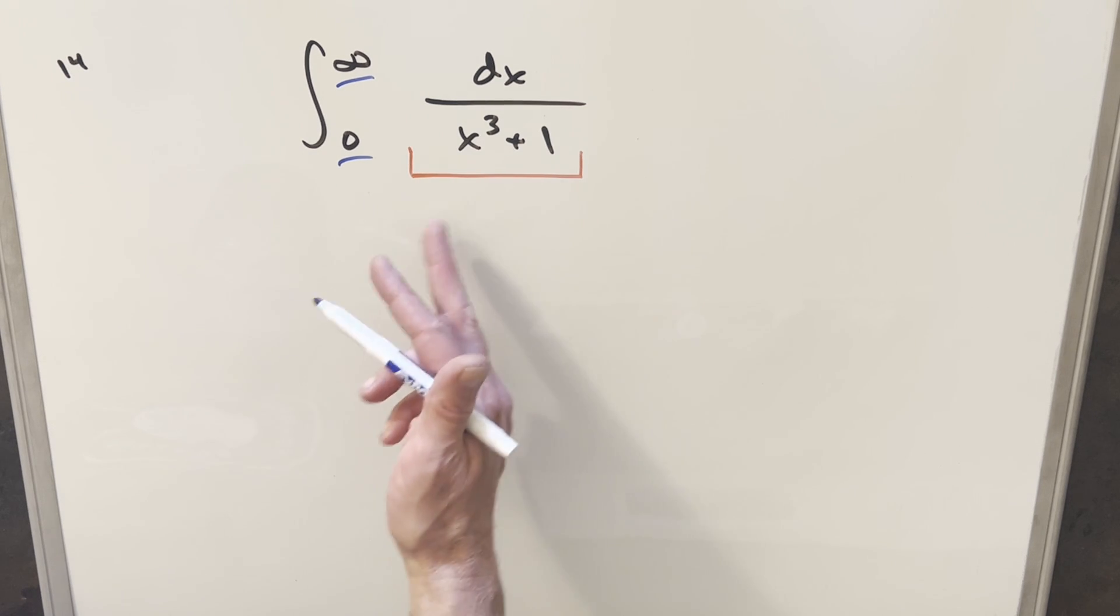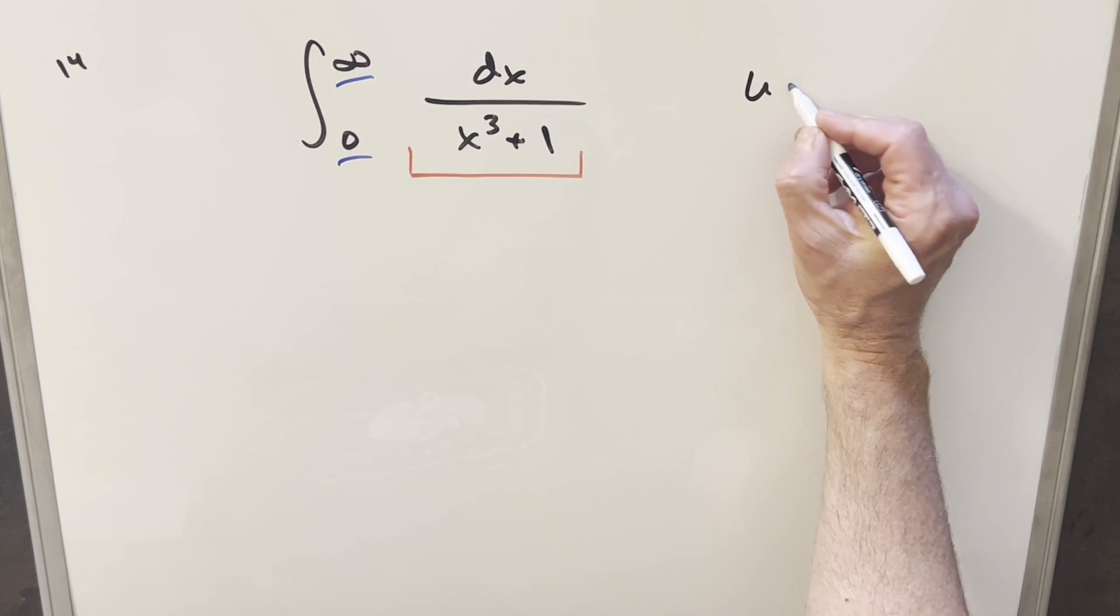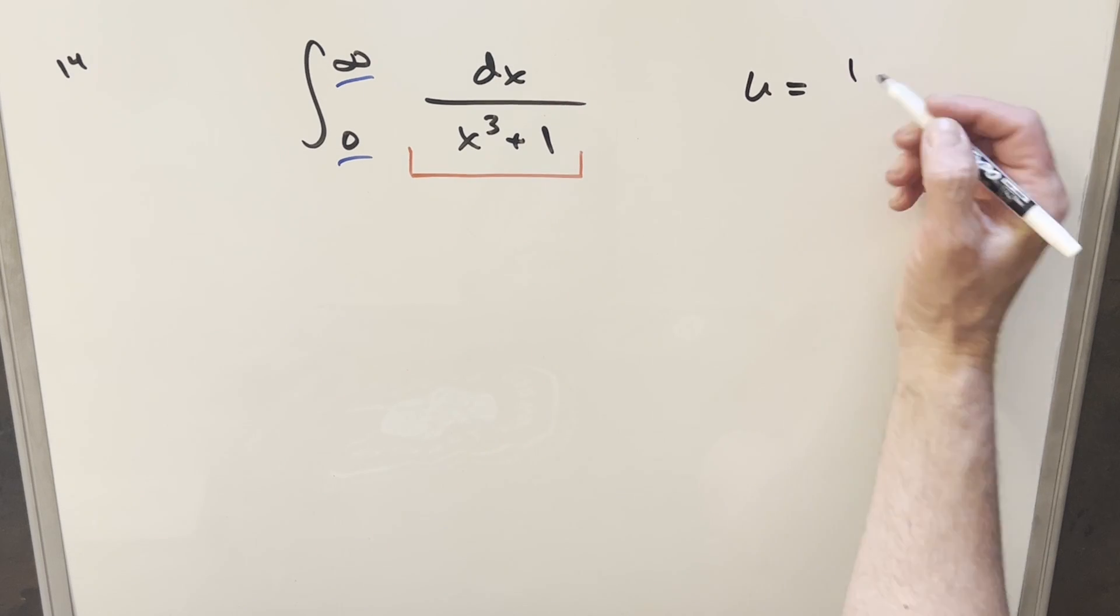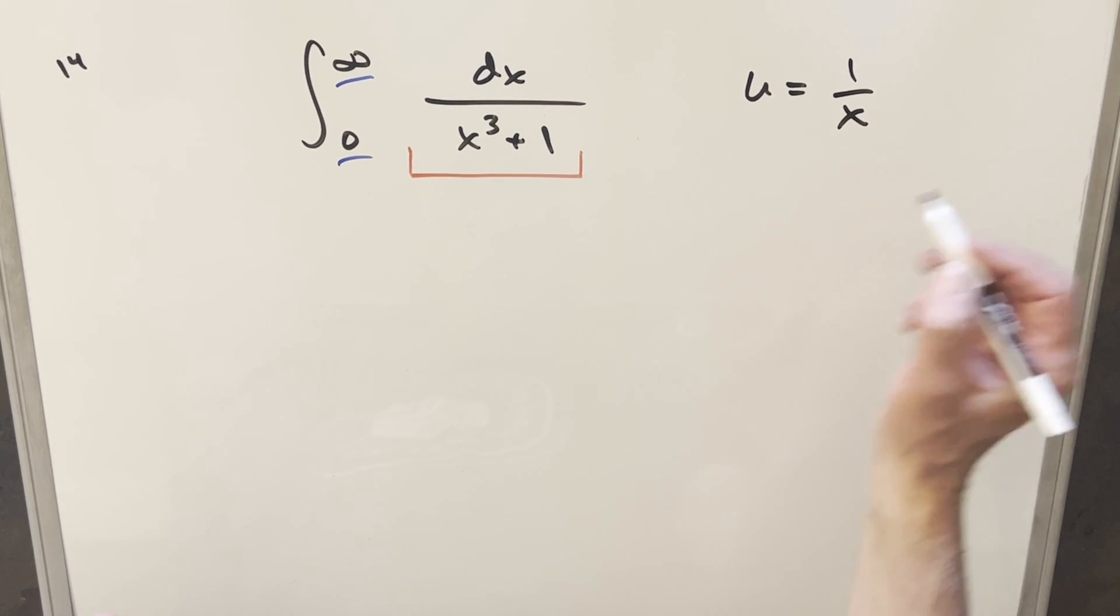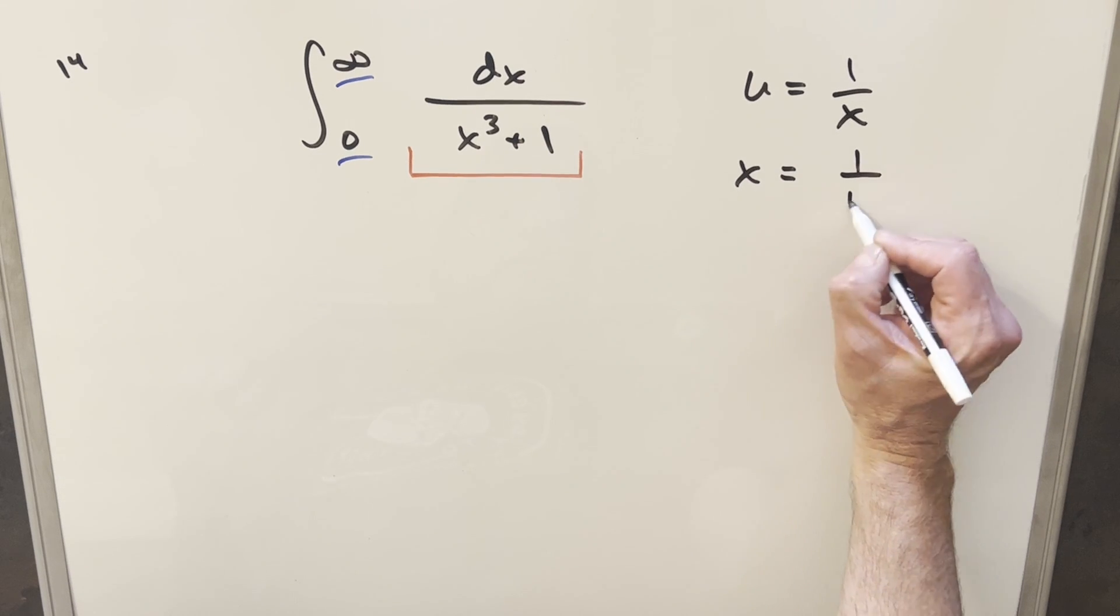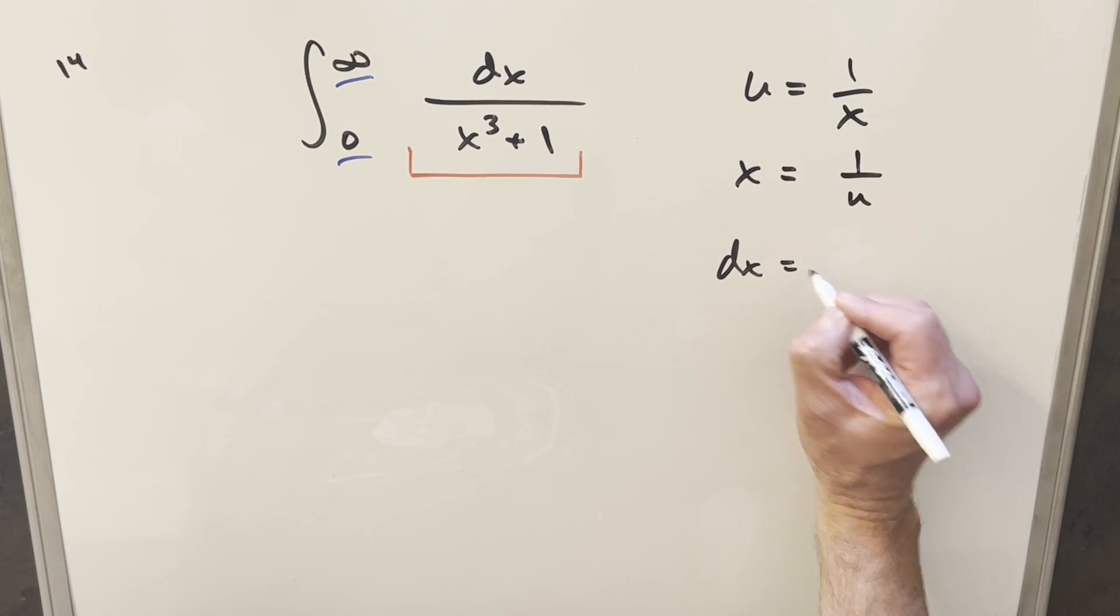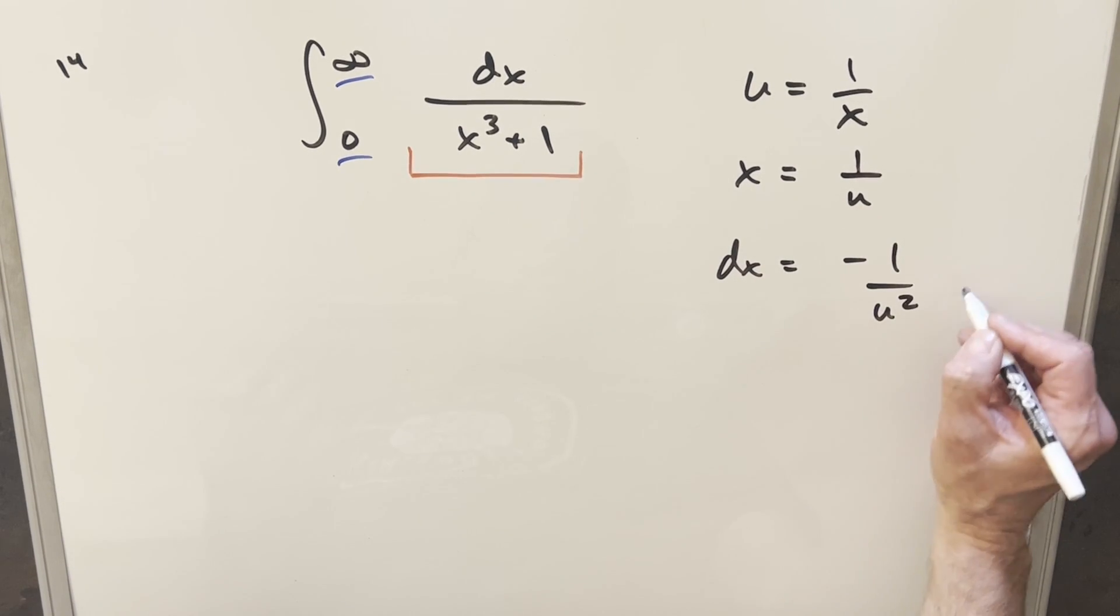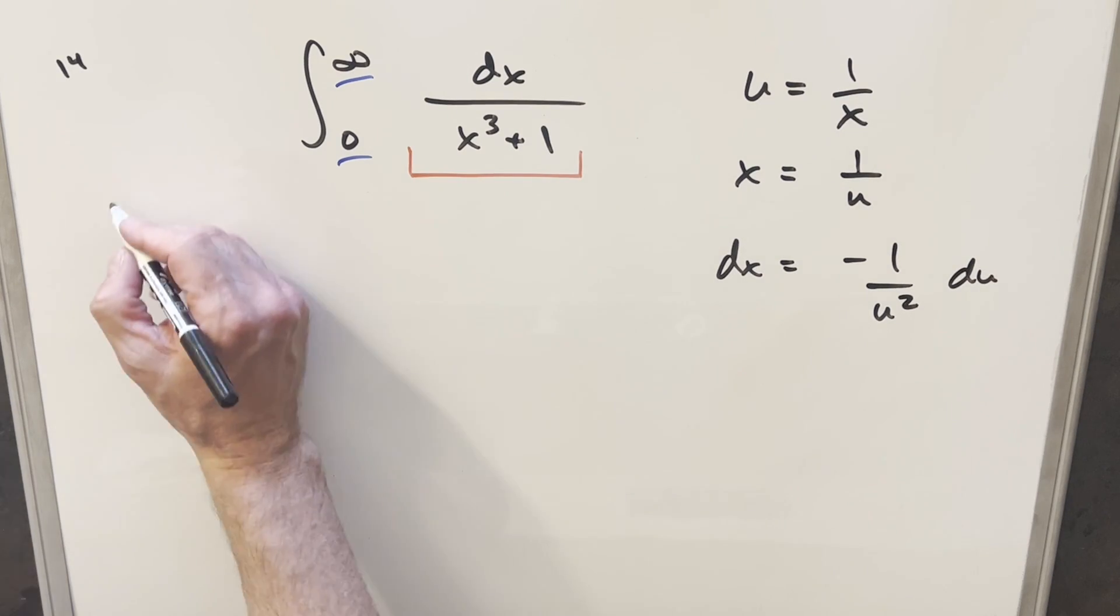But then thinking about it a little bit more with these bounds, we might be able to do something different. And the idea I came to is let's actually avoid the partial fractions. I don't know if it's better or worse, but at least we can avoid the partial fractions, and maybe that'll be more interesting. So to get started on avoiding the partial fractions, what I did was a u substitution. I'm just going to do u equal to 1 over x. Then solving for x, we get x equal to 1 over u. dx is going to be minus 1 over u squared du.